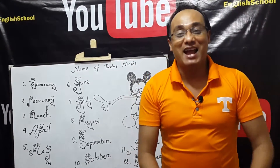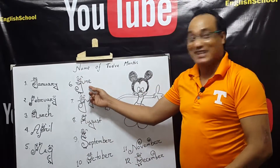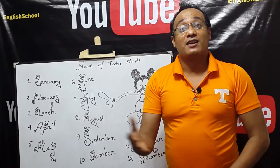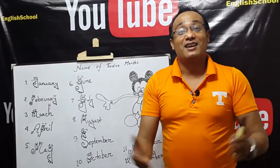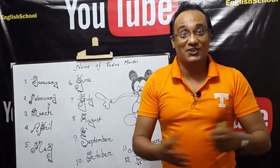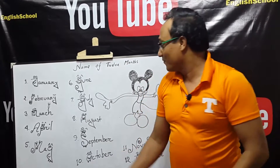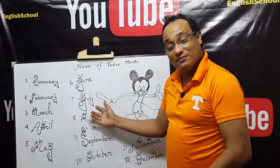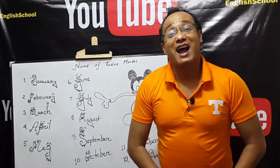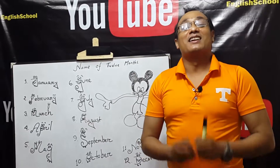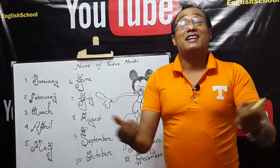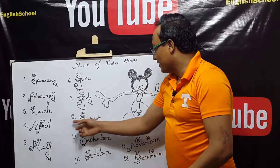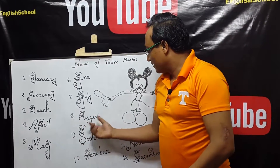Number six: June. Number seven: July. Number eight: August.